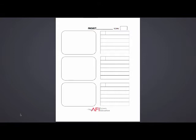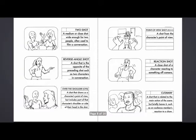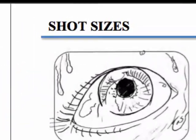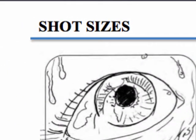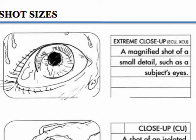To understand storyboards you must first understand the different types of shots available. Let's go into our AFI guide and learn about different types of shots. Shots can be broken down into four different categories: movement, angle, type, and size. Let's start with our sizes — we'll start close and move out. The closer you are to something, the more significant it is for the audience.